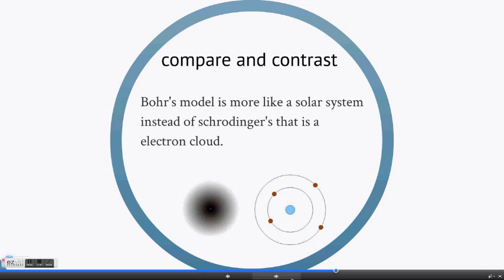Bohr said the nucleus was orbited by electrons, and Schrödinger said the nucleus was surrounded by a cloud of electrons flying around through the cloud. Bohr said the paths that the electrons took around the nucleus were called orbits, and Schrödinger said the paths they took were called orbitals.